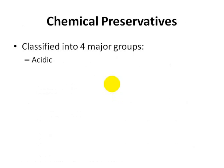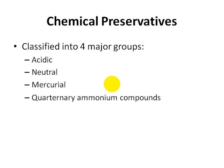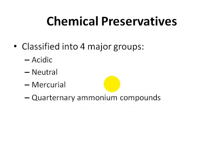Now about chemical preservatives. As far as preservation is concerned, we use different methods of preservation, like physical methods using sterilization or by using chemicals. We are more focused now on chemical preservatives. These chemical preservatives are classified basically into four major groups depending upon their nature and structural components: acidic preservatives, neutral preservatives, mercurial preservatives, and those preservatives which have the structure called quaternary ammonium compounds.